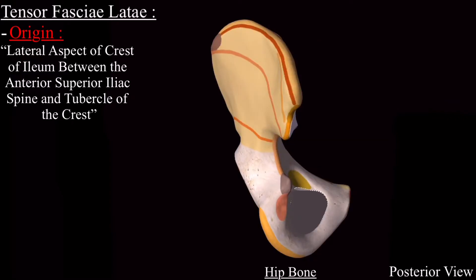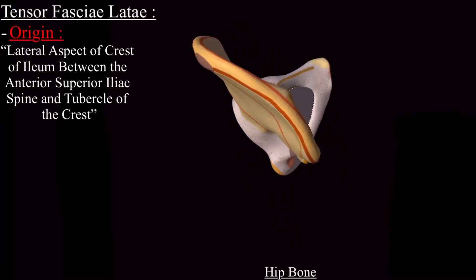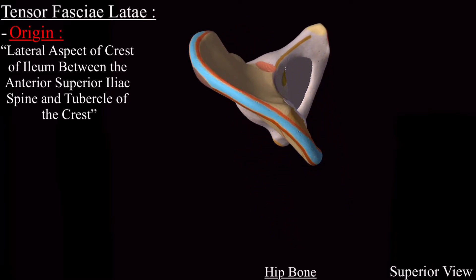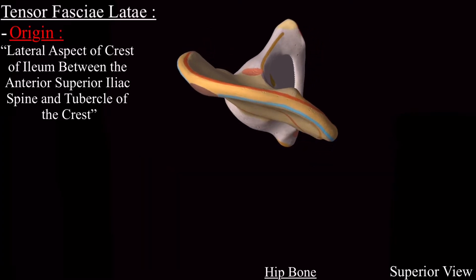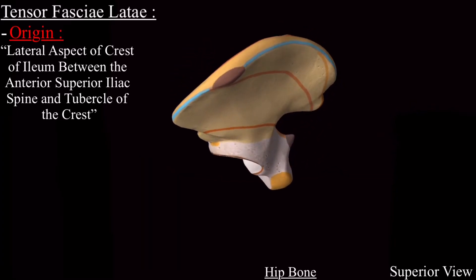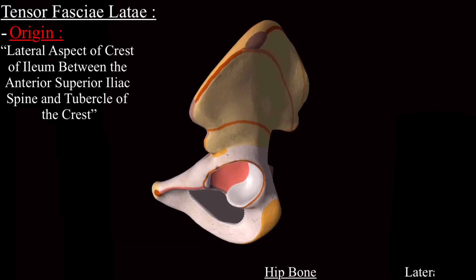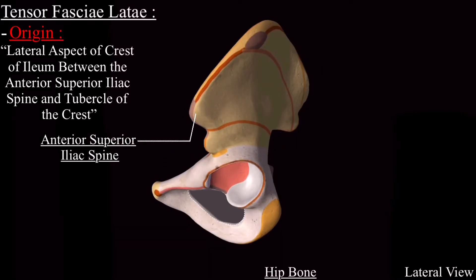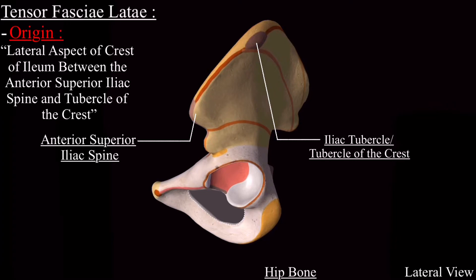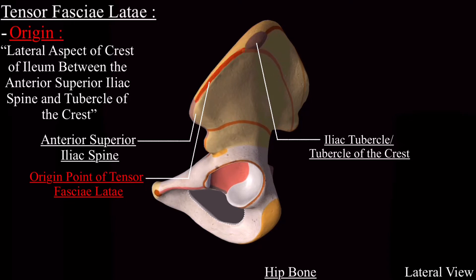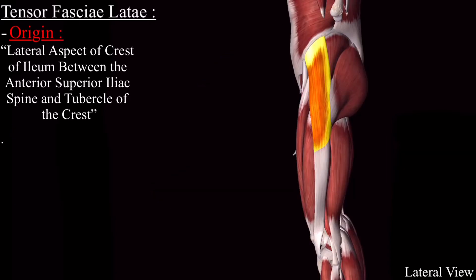This is an isolated hip bone with the posterior view. In the superior view, this is the iliac crest. The iliac crest has two lips: the inner or medial lip and the outer or external lip. This is the anterior superior iliac spine, and this is the tubercle of the crest. This lateral aspect of the crest of the ilium, between the anterior superior iliac spine and the tubercle of the crest, is where the tensor fasciolata originates.